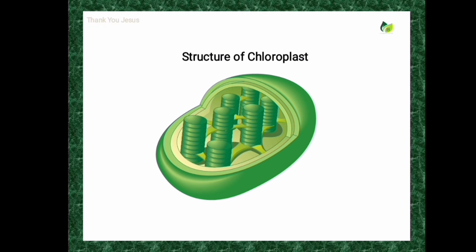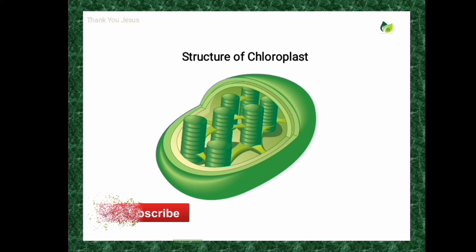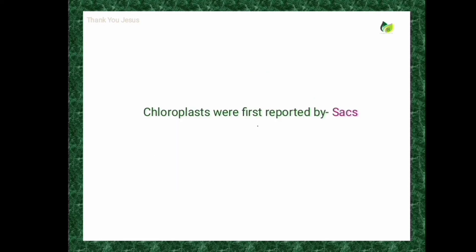The thylakoid membrane is a unit membrane that consists of minute particles called quantosomes. Each quantosome is made up of nearly 230 chlorophyll molecules and 48 carotenoids — these are the pigments that absorb light for photosynthesis. Quantosomes are the real photosynthetic units and are present on the thylakoid membrane.